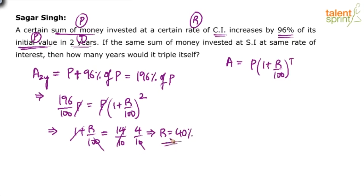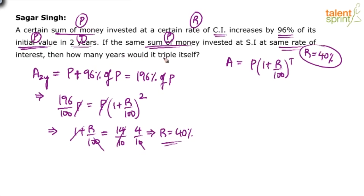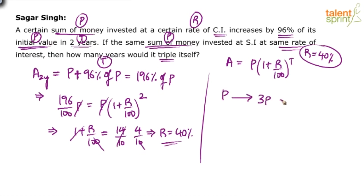So the rate of interest comes out to be 40%. Now for the second part: if the same principal amount P is invested at simple interest at the same rate of interest — 40% — in how many years would it triple itself? Triple itself means it will become 3P. In how many years? The simple interest earned would be 2P.